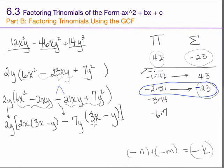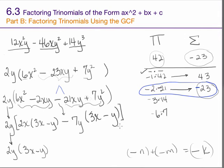Now I can see the common factor for the two big terms. I need to bring down my greatest common factor 2y from the first step, then the inside greatest common factor 3x minus y from the brackets, and then what's left over: 2x minus 7y. That is the final answer: 2y times 3x minus y times 2x minus 7y.